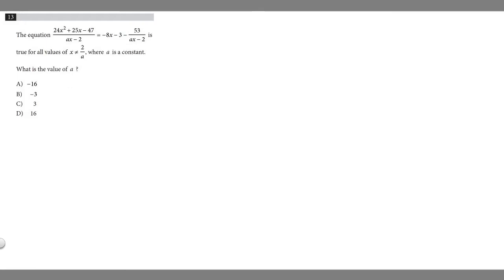So in this problem we're told that the equation 24x squared plus 25x minus 47 over ax minus 2 is equal to minus 8x minus 3 minus 53 over ax minus 2 is true for all values of x where it does not equal 2 over a where a is a constant.